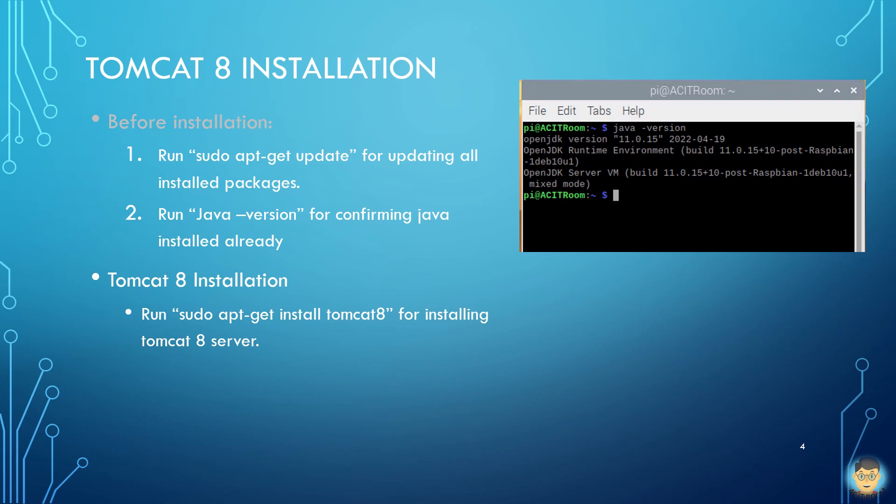Before installing Tomcat server, there are two things to do. First, run the command sudo apt-get update for updating the list of all latest available packages. Second, check the Java version by executing the Java command. The right picture shows this demo Java version.